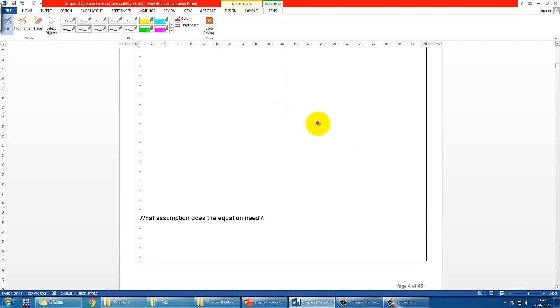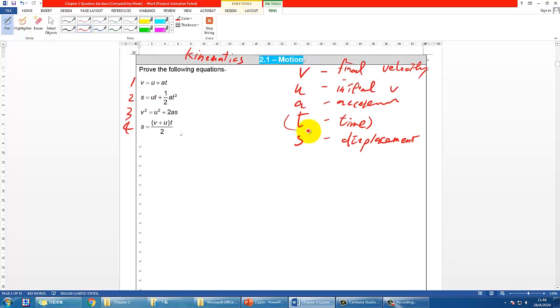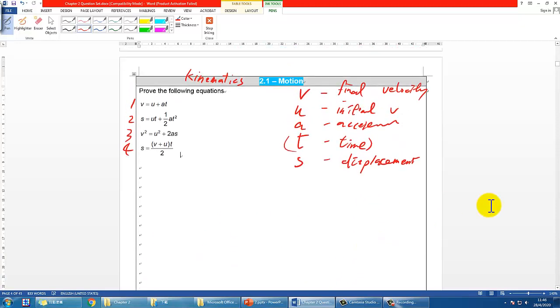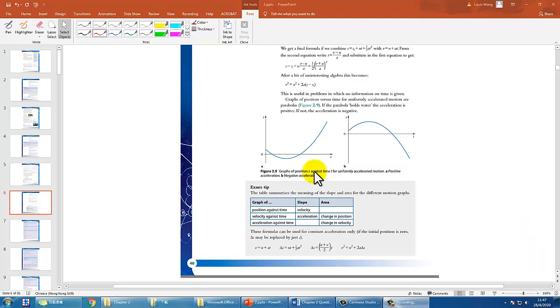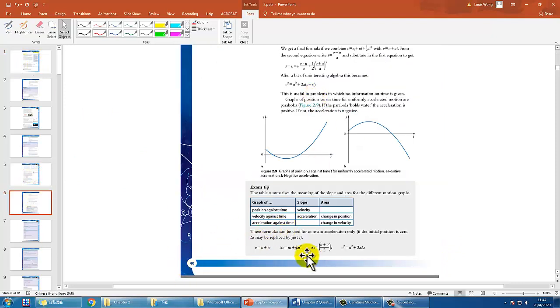One thing you should know before you start is the assumption in all these equations. Acceleration A must be constant throughout the whole motion. You may want to pause the video now and try to prove them yourself. If you don't know how, you can read from the textbook pages 35 to 40 to find the proofs. Two thousand years later...